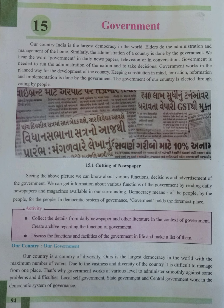Democracy means of the people, by the people, for the people. In a democratic system of governance, the government holds the foremost place. Each country needs the government to take different decisions and to implement those decisions. The government is needed for forming, implementing, and reforming laws according to the constitution.